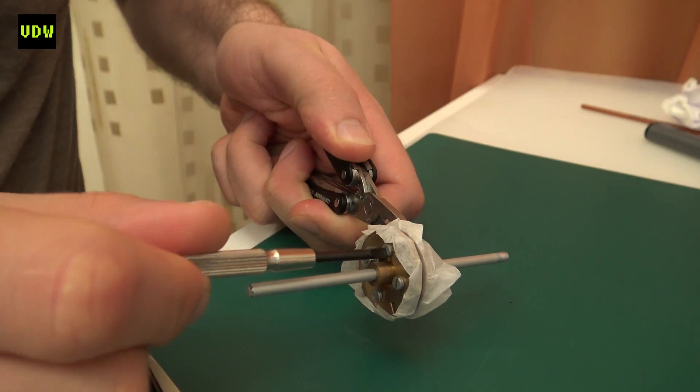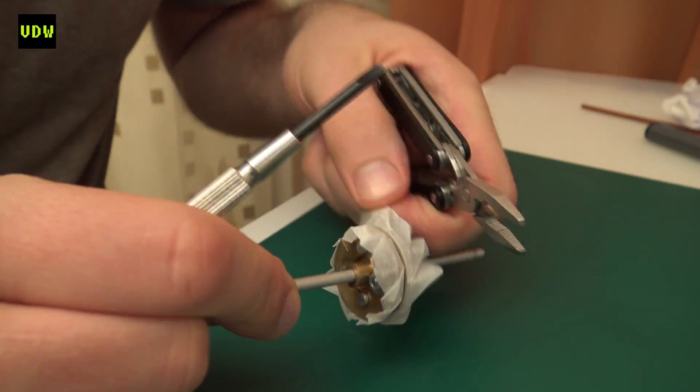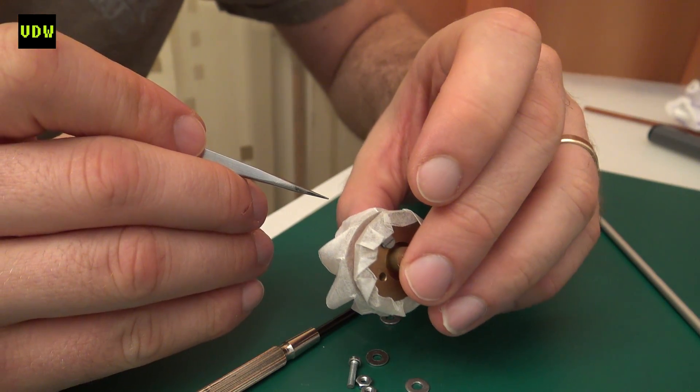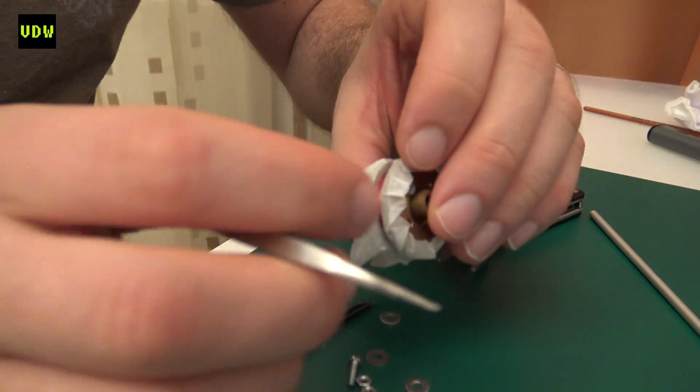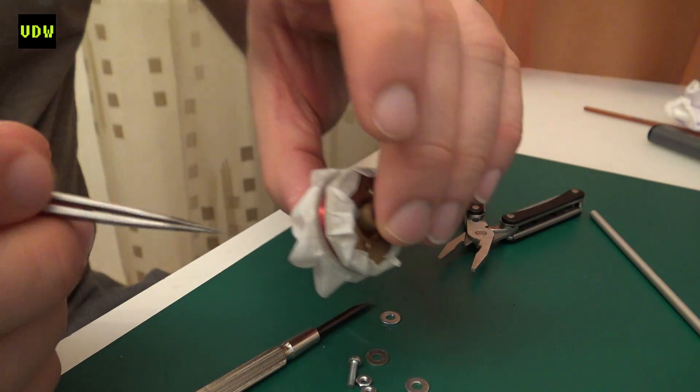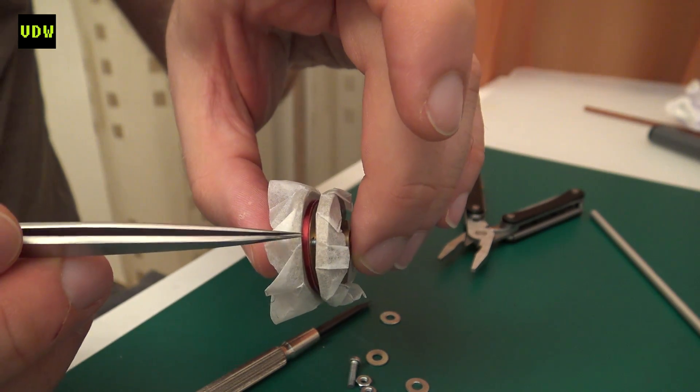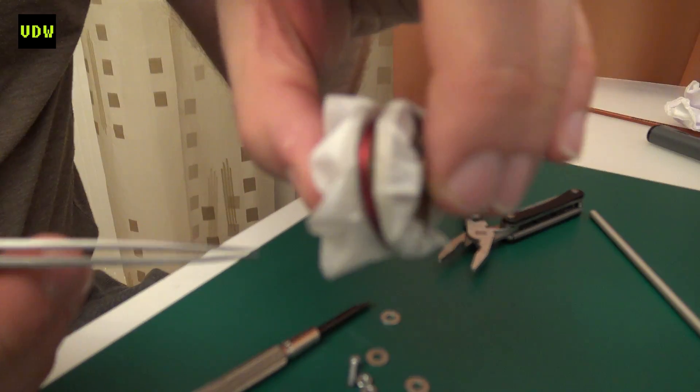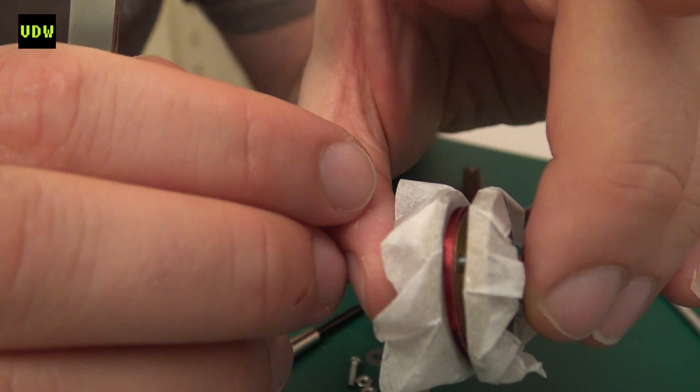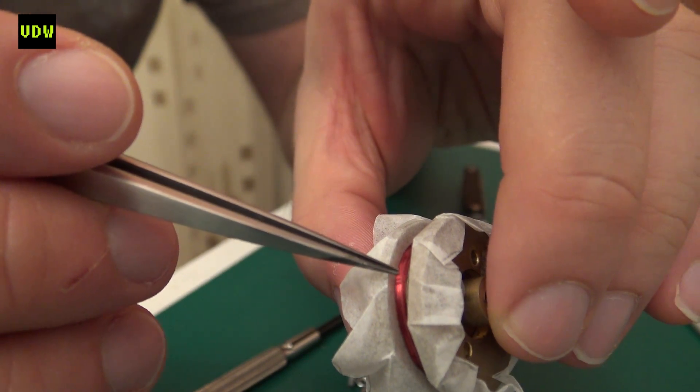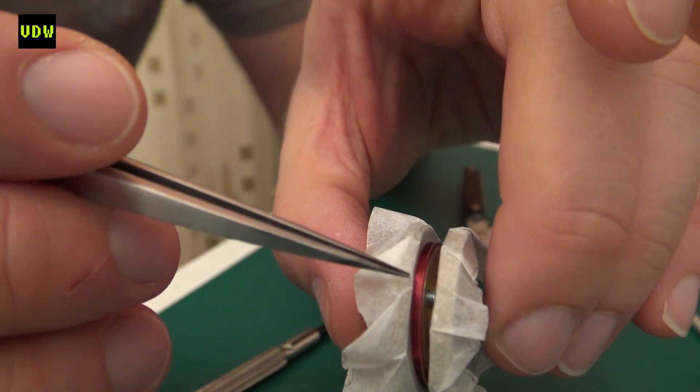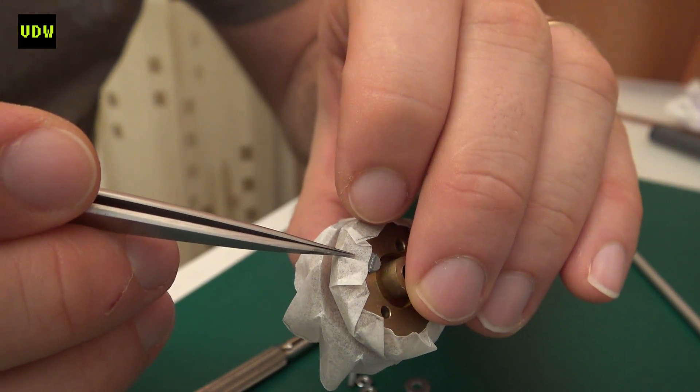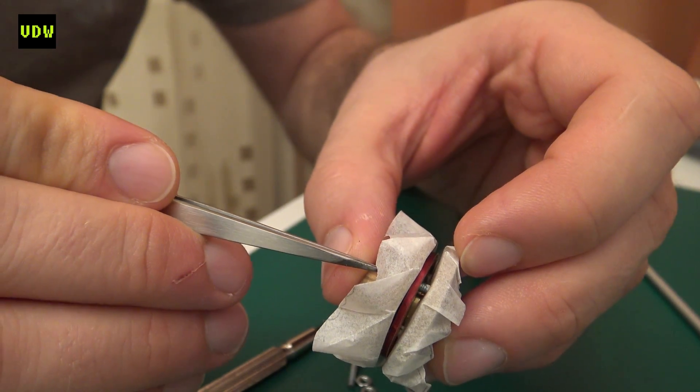And there we've just parted the two sides and I should have done this under the microscope but it seems that it seems to hold pretty well and it hasn't stuck on the waxed paper. Just pull it back gently so I can push out this bolt. And now for the moment of truth.